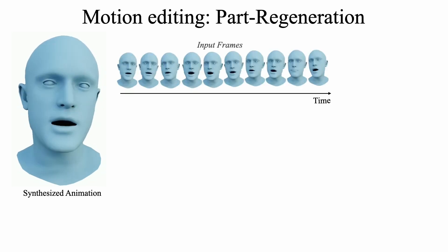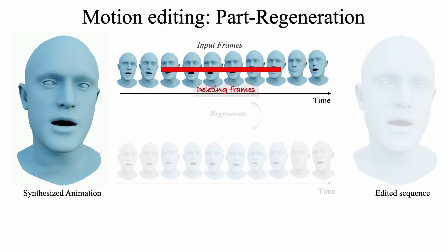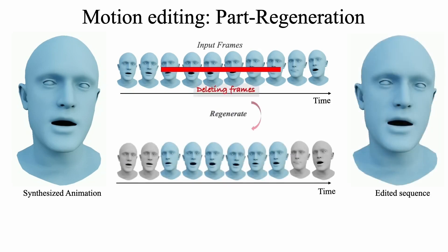By deleting the middle part and using the other part that the user wants to keep, we can generate a new sequence.